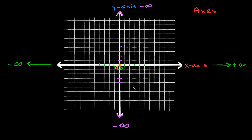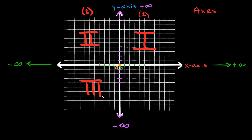Now the other thing I want to go over are the quadrants. This graph has four different sections: top right, top left, bottom left, and bottom right. We split these into quadrants, each with its own name — they're just numbered. This top right section is quadrant one (or the Roman numeral I). Going counterclockwise: the top left is quadrant two, then quadrant three on the bottom left, and finally quadrant four on the bottom right.